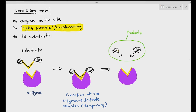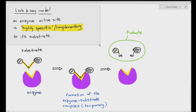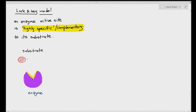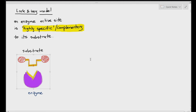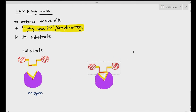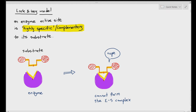The enzyme is basically unaffected and can be reused. Now, what if there's another type of substrate trying to react with this enzyme — would they be able to react with each other? Based on the lock and key model, no, it will not be able to react. The reason is because the shape of the substrate is not complementary to the active site of the enzyme, so it cannot form the enzyme-substrate complex. No reactions can take place in this situation; nothing happens.